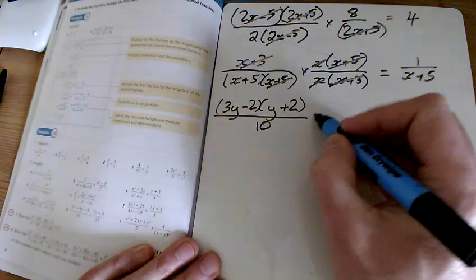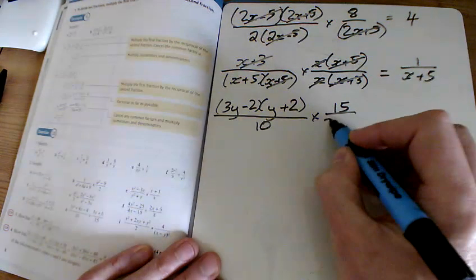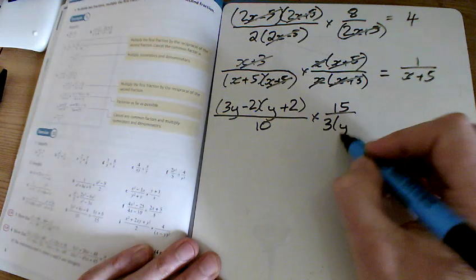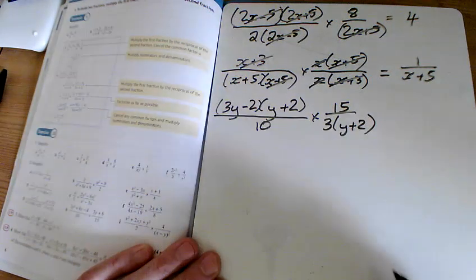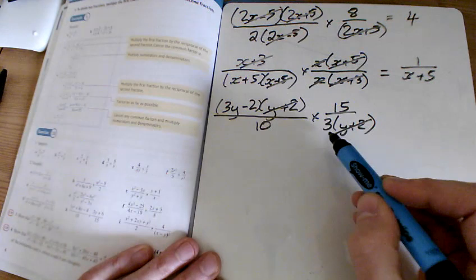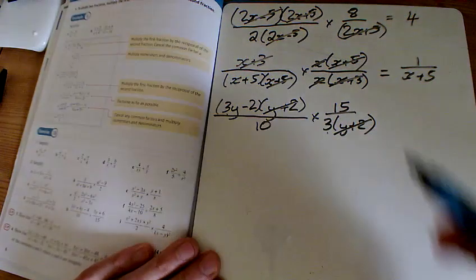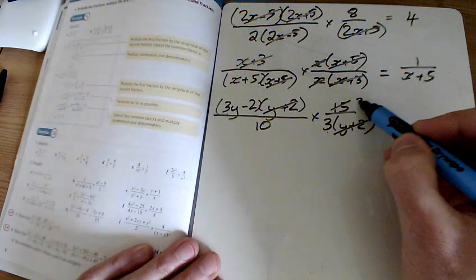On the bottom of that one I've got a 10, and I'm timesing by flipping this one upside down, 15 over 3 lots of y plus 2. The y plus 2 will cancel with that y plus 2. You can't cancel this 3 with that 3 because it's not the full factor, but you can say 5s into that go 3.